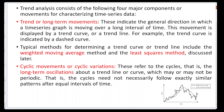This movement can be represented in the form of trend curves or trend lines. For example, the trend curve is indicated by a dashed curve, while the solid line is called the actual curve. Typical methods for determining a trend curve include the weighted moving averages method and the least squares method. The second component, cyclic moments or cyclic variations, refers to long-term oscillations — the ups and downs about the trend lines or curves, which may or may not be periodic.